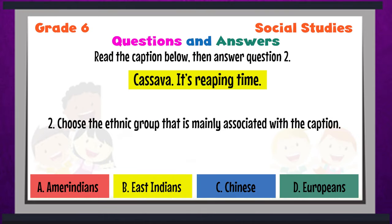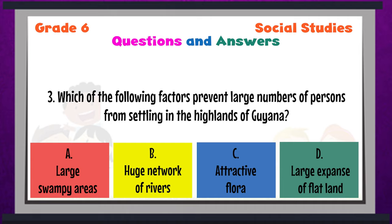Question 2 is also based on the caption: Cassava, it's reaping time. Choose the ethnic group that is mainly associated with the caption: A, B, C, or D. Question 3: Which of the following factors prevent large numbers of persons from settling in the highlands of Guyana? A, B, C, or D?